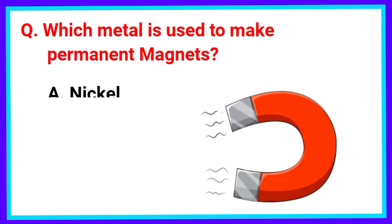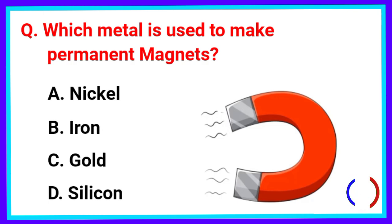Which metal is used to make permanent magnets? The correct answer is Option B. Iron.